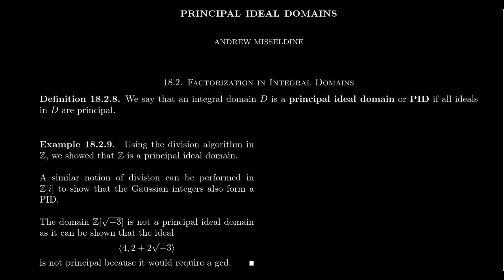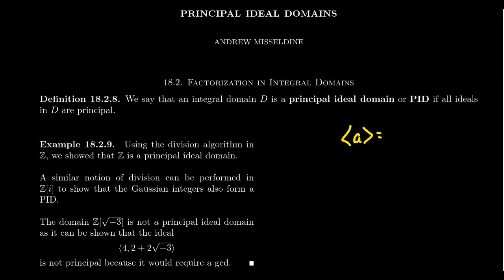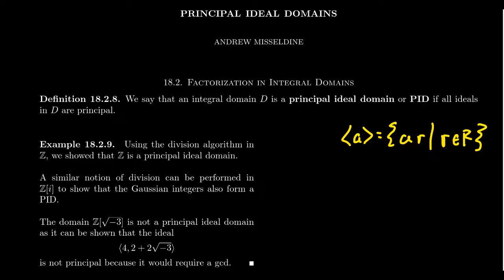We say that an integral domain D is a principal ideal domain, often called a PID for short, if all of the ideals in the domain are principal. A principal ideal — particularly in a commutative ring — is an ideal generated by a single element, denoted using angle brackets. In a commutative ring with unity, the principal ideal looks like everything of the form A times R, where R is an arbitrary element of the ring. We use angle brackets (not parentheses) for principal ideals in this lecture series.